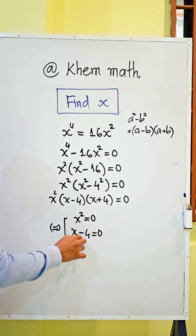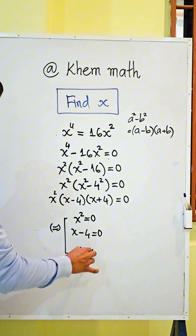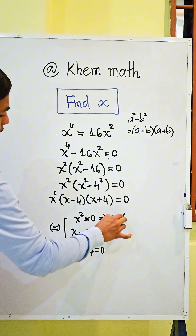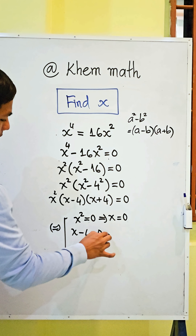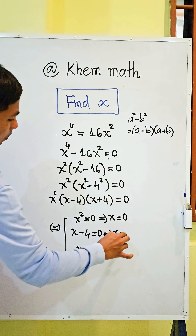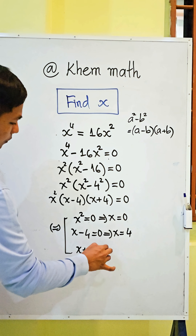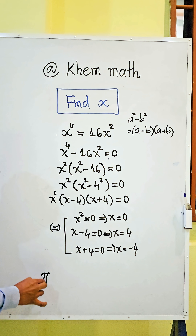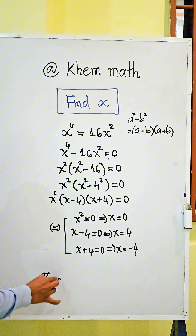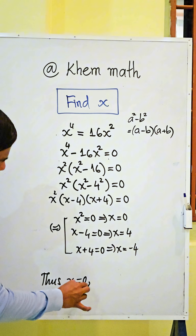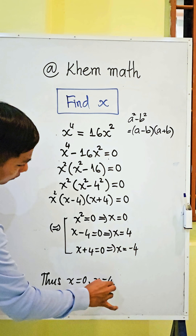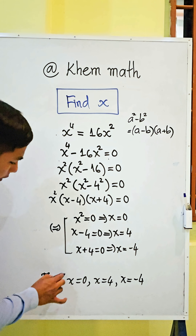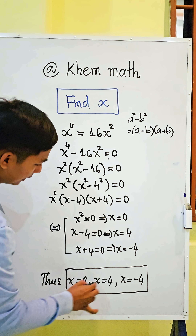From each factor: x² = 0, x - 4 = 0, x + 4 = 0. So we get x = 0, x = 4, and x = -4. Thus x = 0, x = 4, x = -4 is our answer.